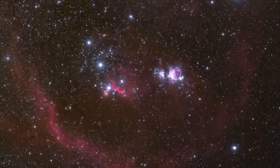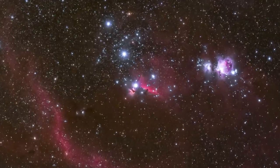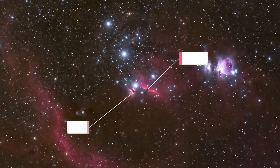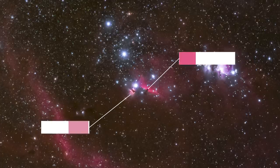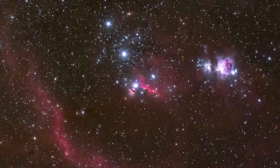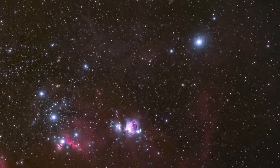If we zoom into the star Alnitak, one of the three stars that makes up Orion's Belt, we find the Flame and Horsehead Nebulae - no prizes for guessing where they get their names. The Horsehead Nebula is a dark nebula that stands out against a backdrop of an HII region, red in color due to the prominence of hydrogen-alpha emissions, making it a great target for astro-modified cameras.